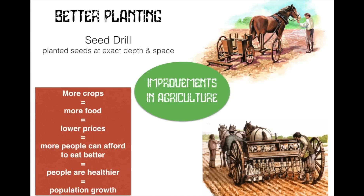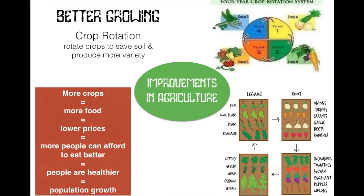Population growth also results from crop rotation. By rotating crops from field to field and better managing the soil, farmers produce a wider variety of foods. The soil stays healthier, yielding more crops. More crops equals more food, more food equals lower prices, lower prices means more people can afford to eat better, people are healthier, and that results in population growth.